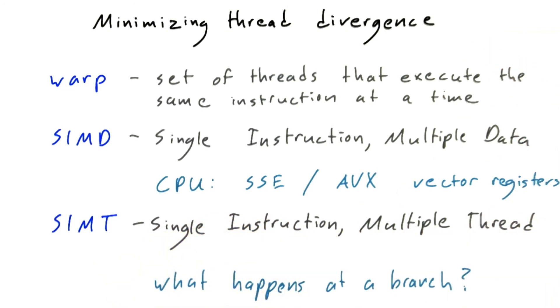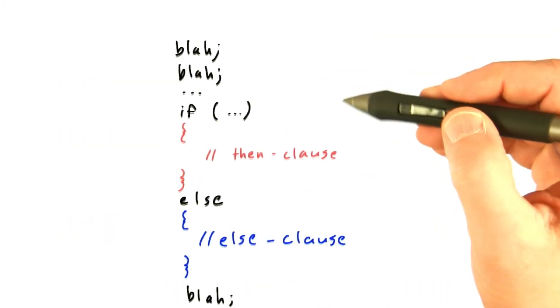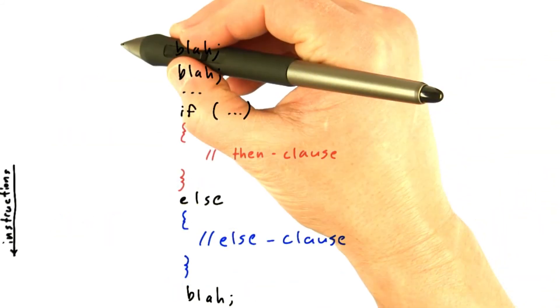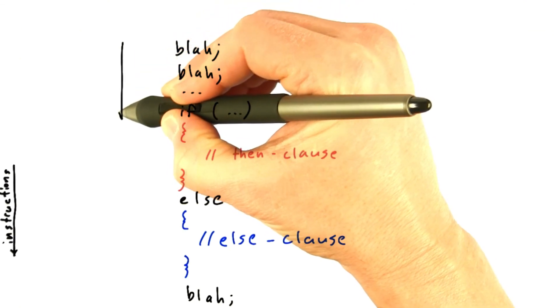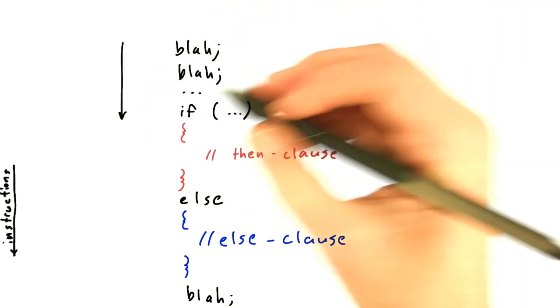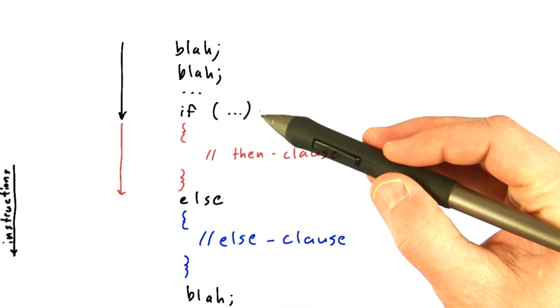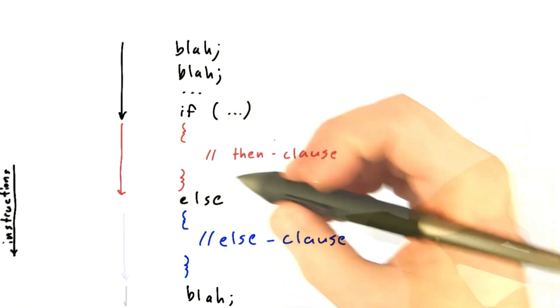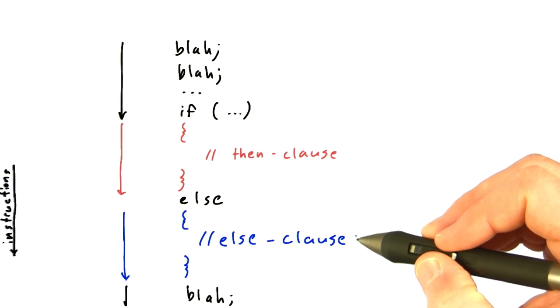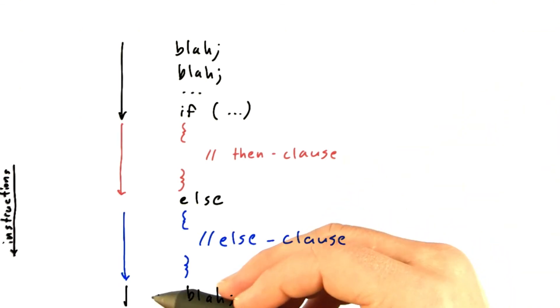It all comes down to what happens at a branch in the code. Here's some code with an if-else statement, and I'll color the instruction stream black for instructions that all the threads are going to execute, red for instructions that only threads that take this branch in the if statement will execute, blue for instructions that only threads that take the else branch will execute, and black again.